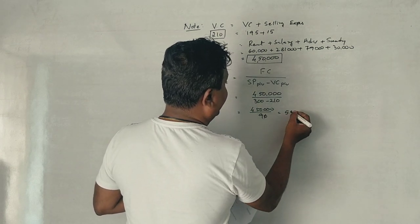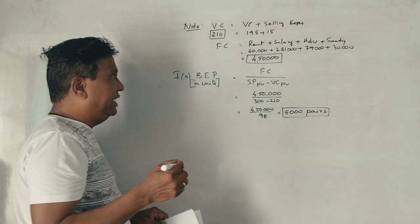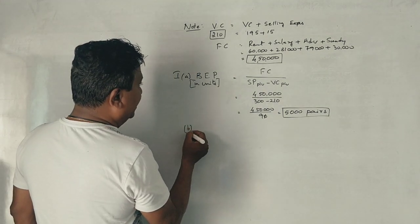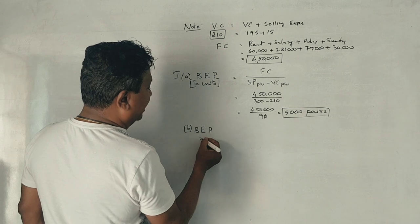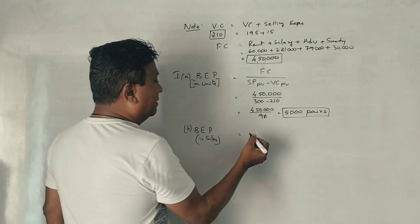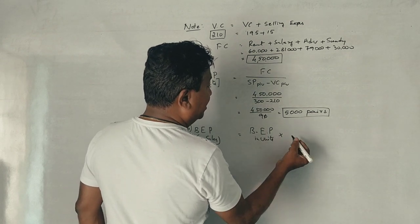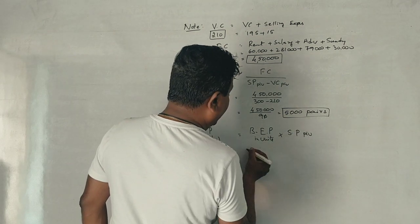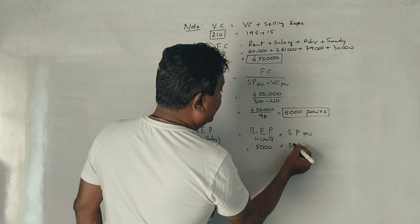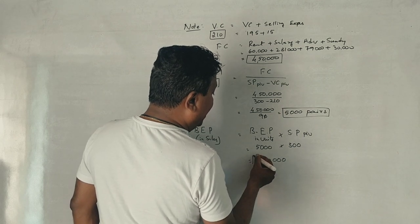So break-even point = 4,50,000 divided by 90 = 5,000 pairs. For the sales value at BEP: 5,000 pairs multiplied by 300 rupees selling price gives 15,00,000 rupees in sales.